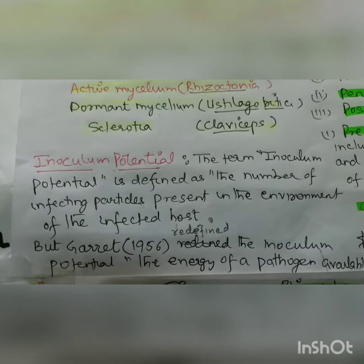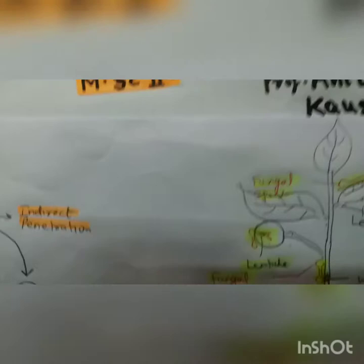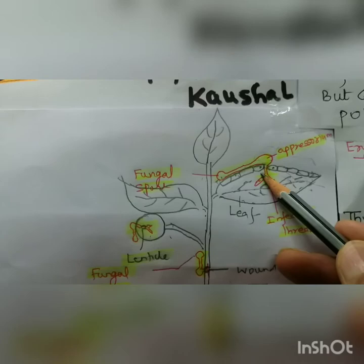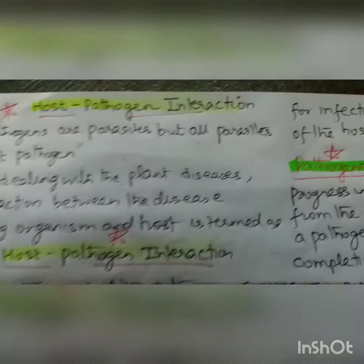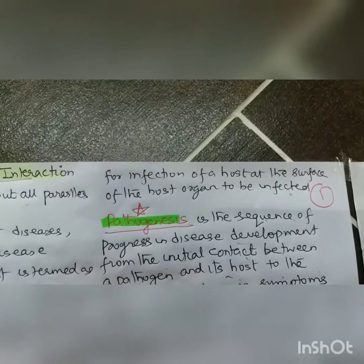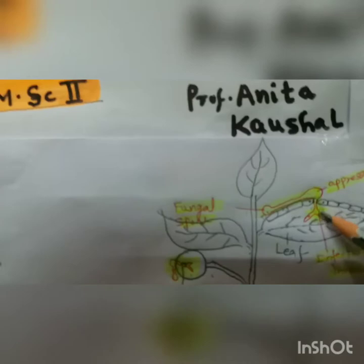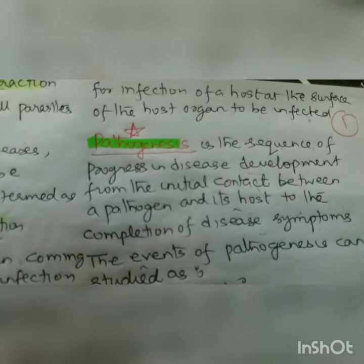Second is the inoculum potential. The term inoculum potential is defined as the number of infecting particles present in the environment of the infected host — basically the number of fungal spores in a given leaf area. Garrett in 1956 redefined it as the energy of the pathogen available for infection of a host at the surface of the host organ to be infected — meaning the energy available to penetrate.